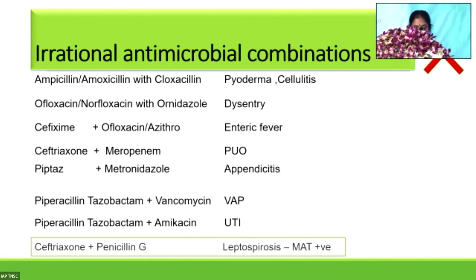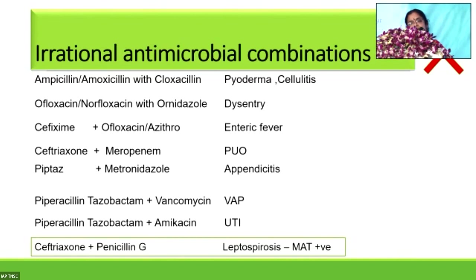For example, in a child being worked up for PUO started on ceftriaxone, if MAT becomes positive confirming leptospirosis — adding penicillin G, which is the drug of choice, to ceftriaxone is irrational. You should stop ceftriaxone and continue with penicillin alone. Or if the patient is already responding to ceftriaxone, there is no need to add penicillin.